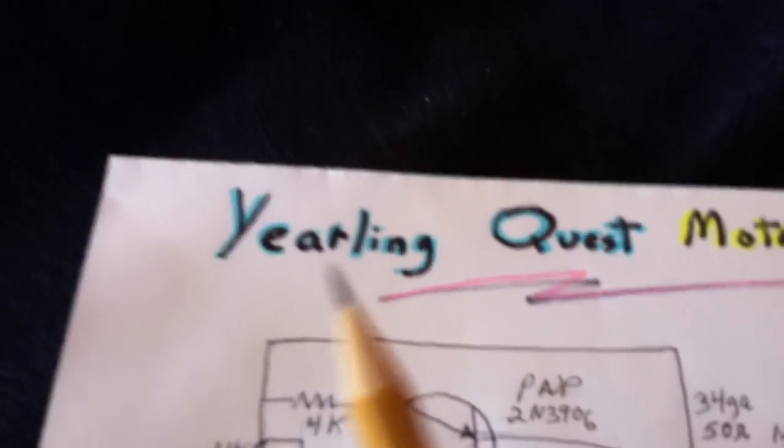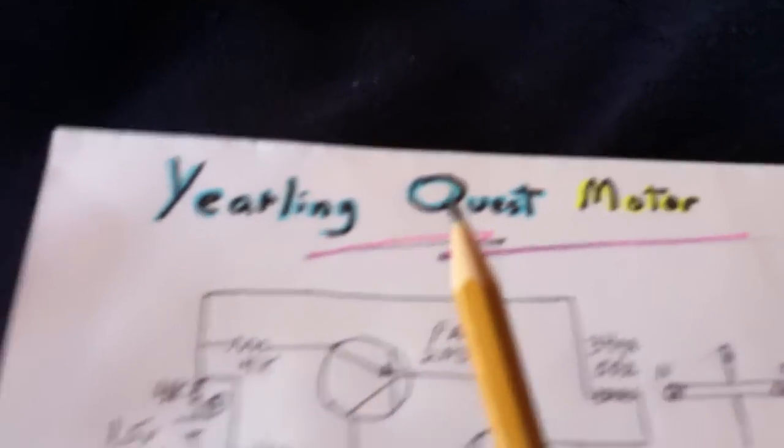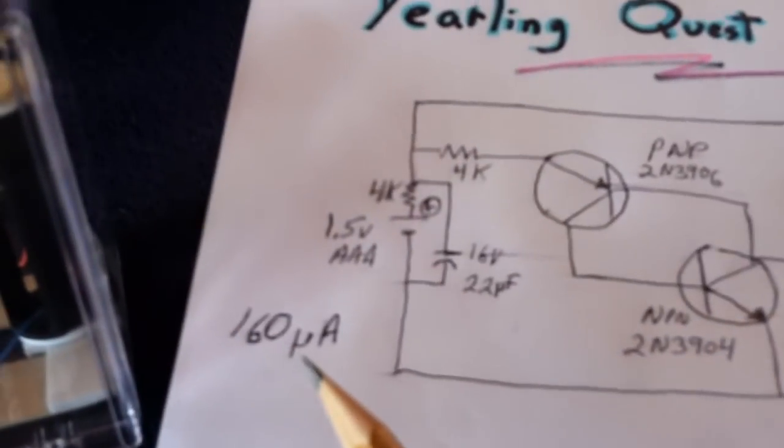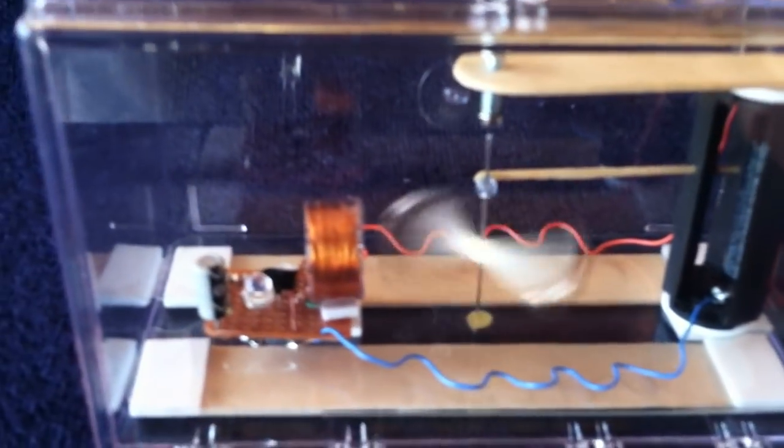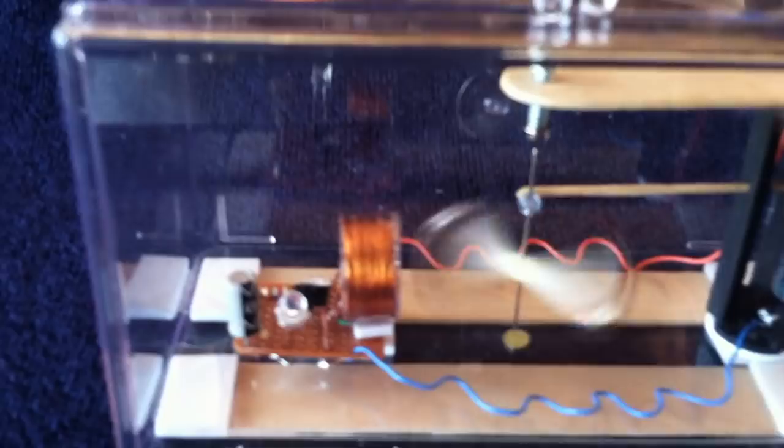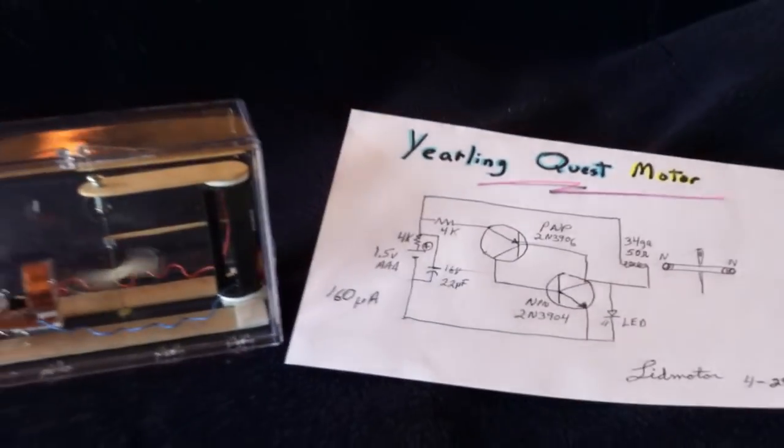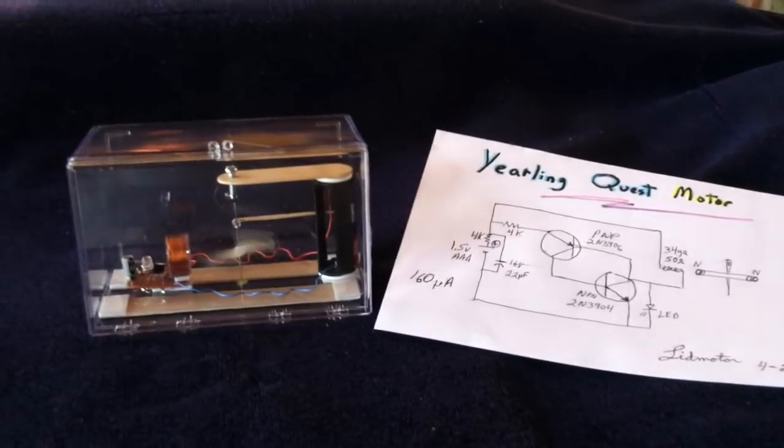And the idea was to make this go a year, if I could. Now, it's a 160 microamp draw, but it's not all the time. It's being pulsed. And because it's a two-pole rotor, it's only pulsed twice per revolution. And that's what I'm thinking. I might get a year out of it. So I'm just going to call this the Yearling Quest motor, and I'll put that somewhere out of harm's way and see if it'll go.